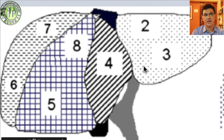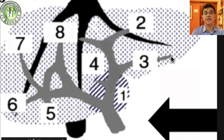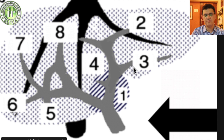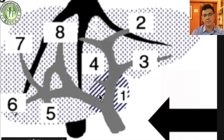Looking at the diagram again: we have 2, 4, 8, 7 going across, then below 7 will be 6, then 5, 4 and 3. The hepatic veins divide segments 2, 4, 8 and 7, while the portal vein level divides segments 3, 4, 5 and 6. Segment 1, of course, is the caudate lobe.